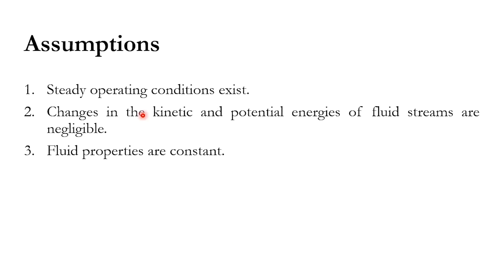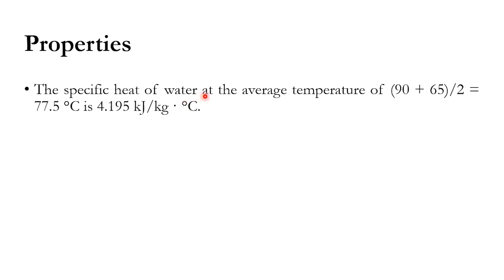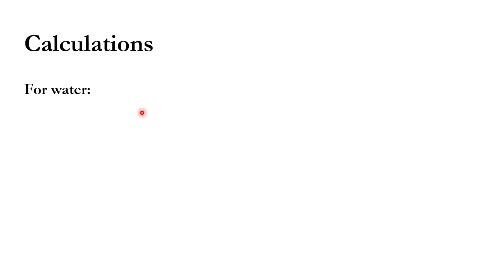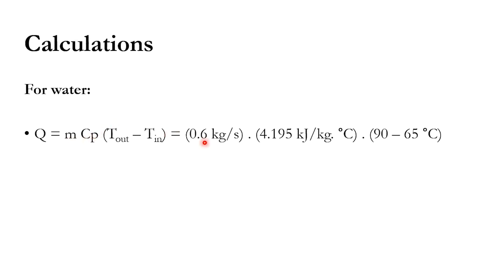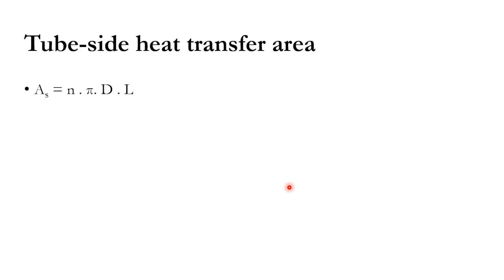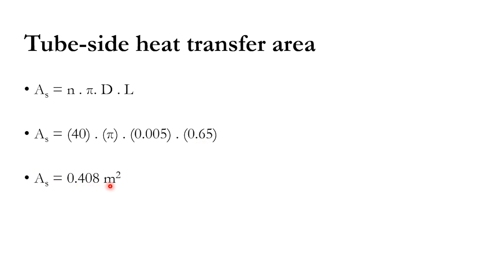Assumptions: steady state, negligible kinetic and potential energy changes, constant fluid properties. Specific heat of water at average temperature (90+65)/2 = 77.5°C is 4.195 kJ/kg°C. For water: Q = m·Cp·ΔT = 0.6 × 4.195 × (90−65) = 62.93 kW. Tube-side heat transfer area A = N·π·d·L = 40 × π × 0.005 × 0.65 = 0.408 m².